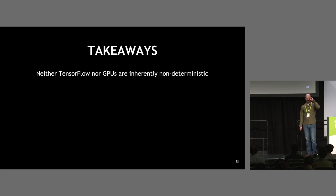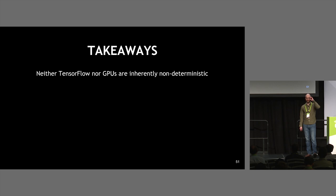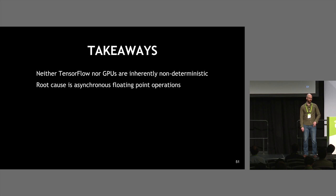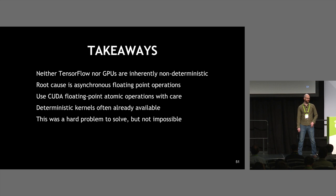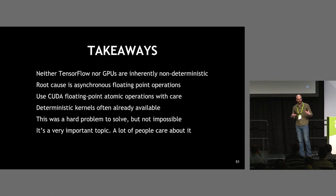The takeaways: neither TensorFlow nor GPUs are inherently non-deterministic — that's absolutely clear. The root cause is asynchronous floating point operations. It's important to use CUDA Atomic operations carefully and understand their effect. Remember that there's often already a deterministic kernel available. This was a hard problem but not impossible — it took me a year to solve. It's actually a really important topic; people kind of secretly care about this but don't say anything when a model won't train and they can't debug it.